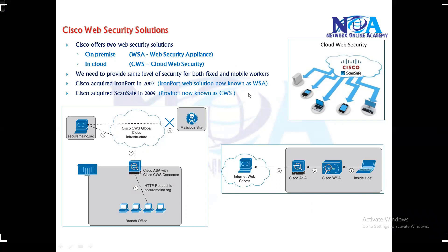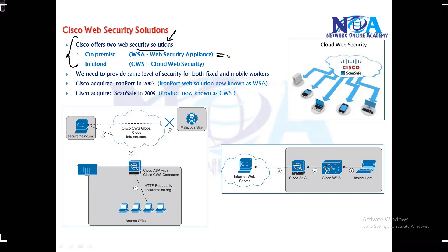The next thing we'll try to understand is the Cisco solution to provide web security. Cisco mainly offers two solutions: one is for on-premises by using a dedicated device called WSA, and another solution for cloud web security.